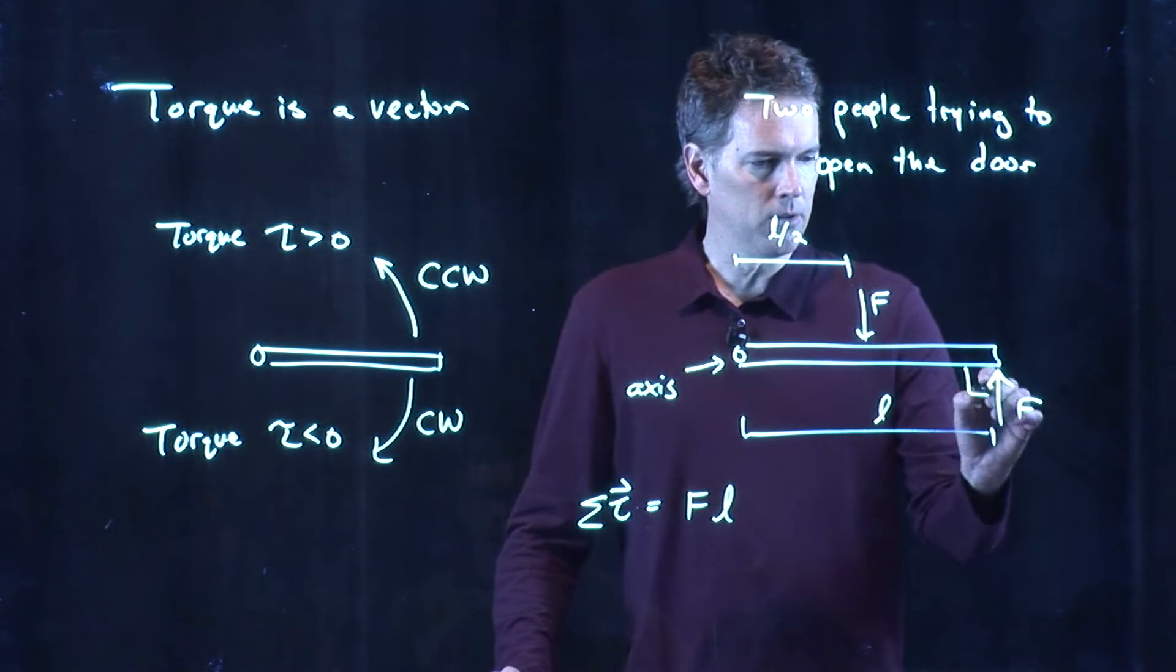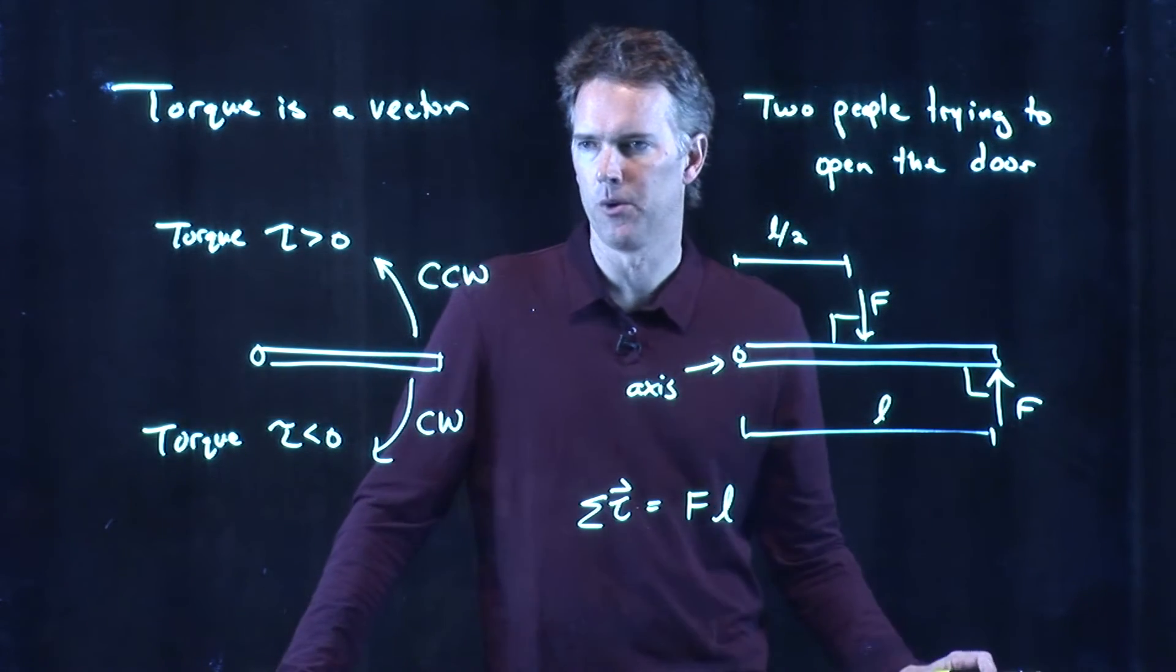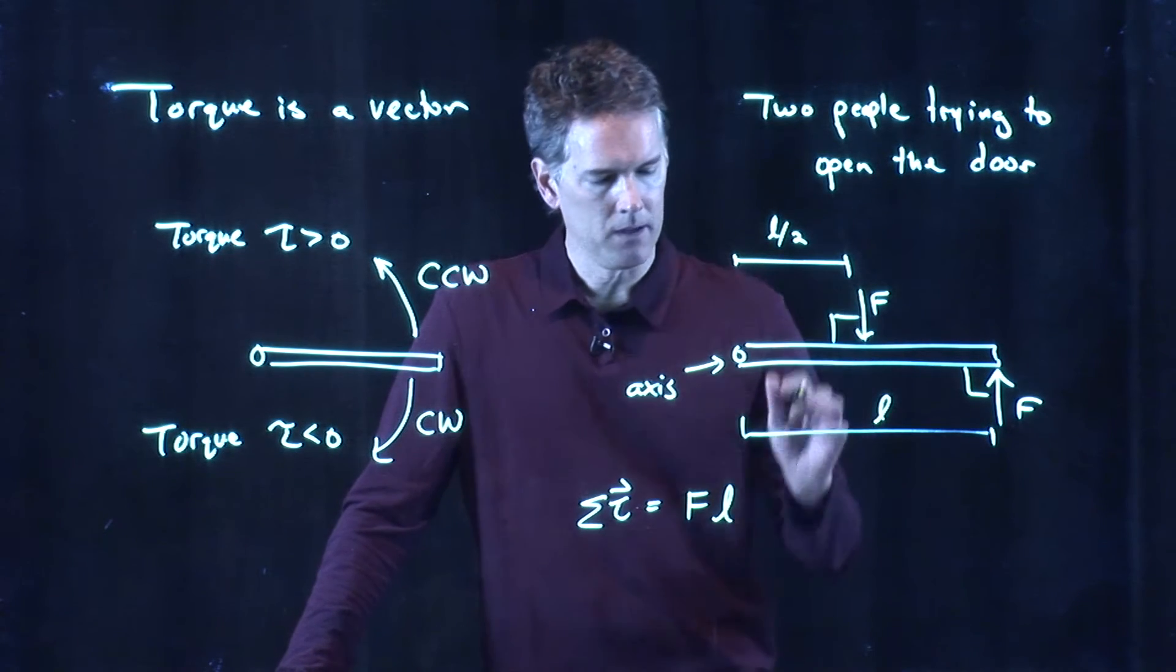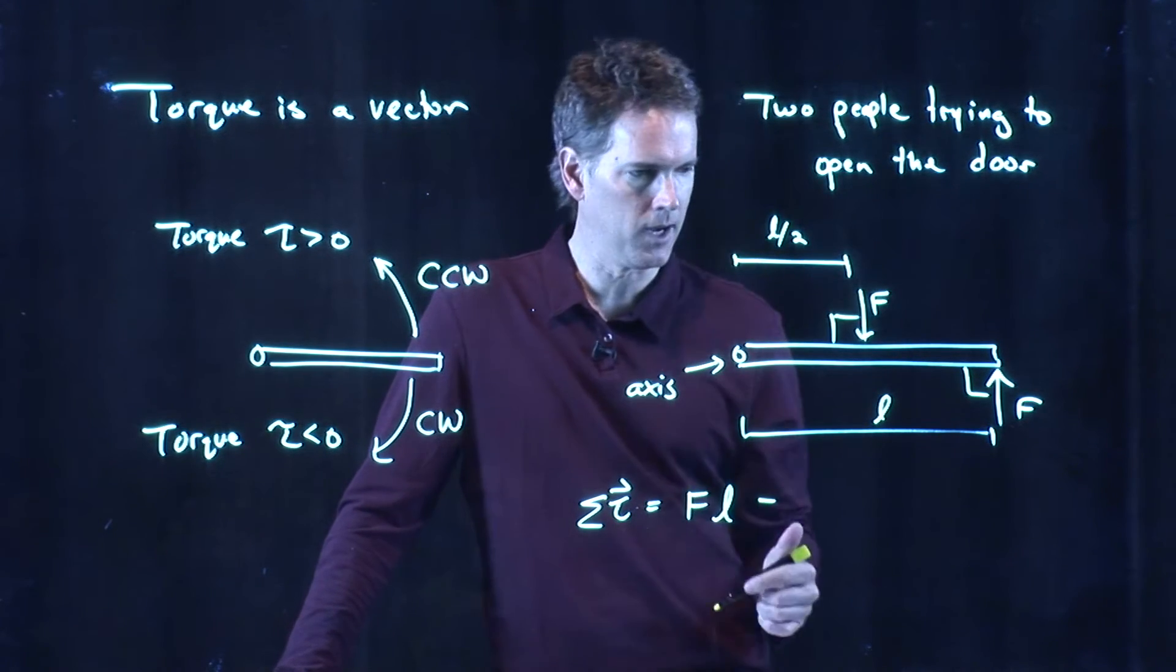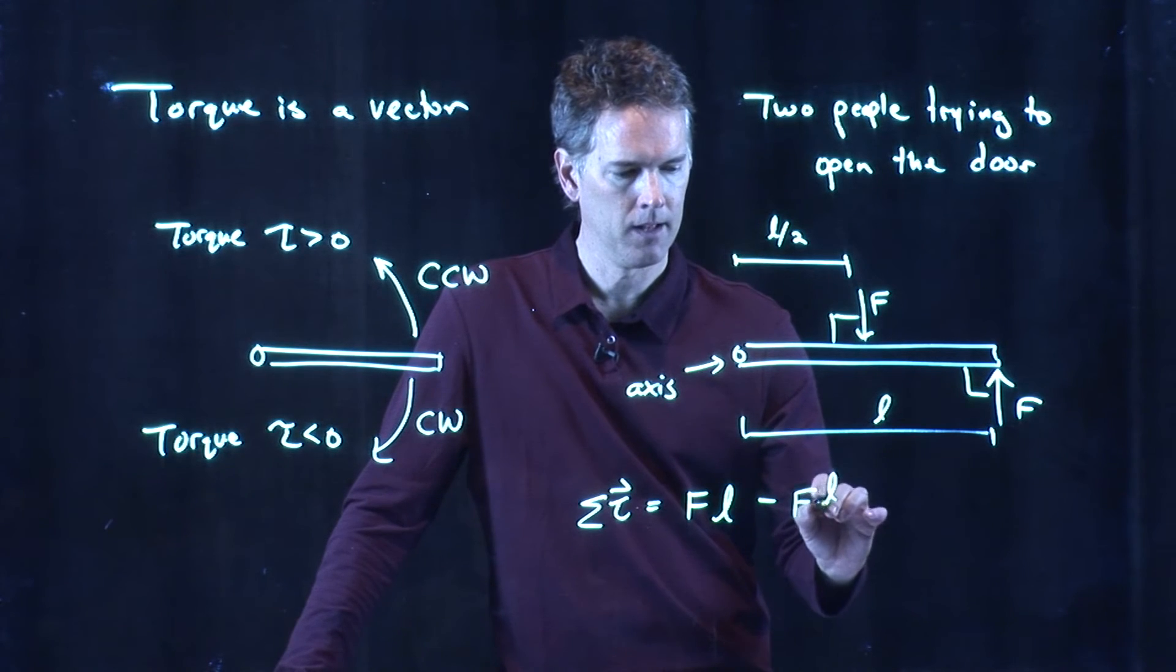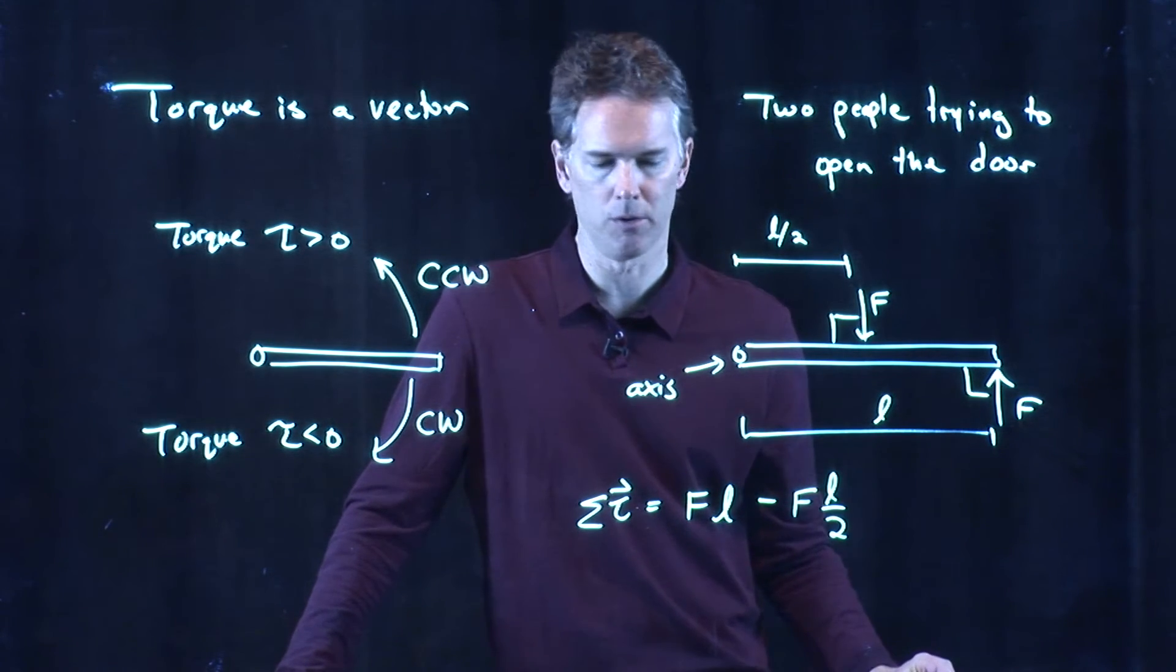If these are right angles, then the lever arm is just the full length of the door, L. What about the other guy? The other guy is trying to rotate it clockwise. And so we put a negative sign in front of it. Its lever arm is halfway down the length of the door, and so it's L over two.